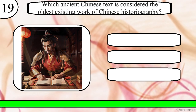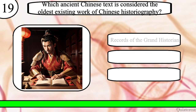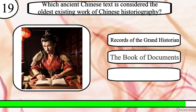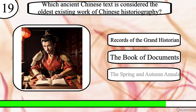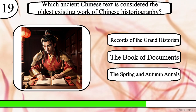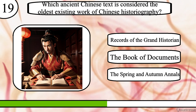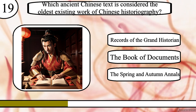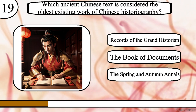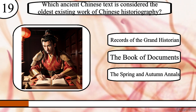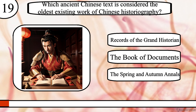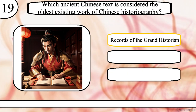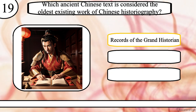Question 19. Which ancient Chinese text is considered the oldest existing work of Chinese historiography? Records of the Grand Historian, the Book of Documents, or the Spring and Autumn Annals? The correct answer is Records of the Grand Historian.